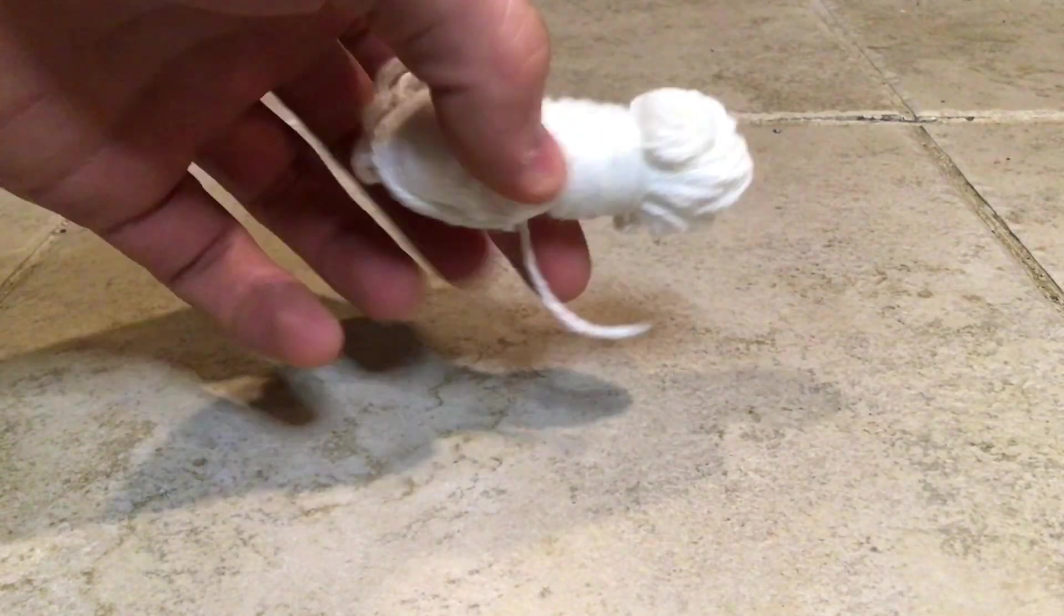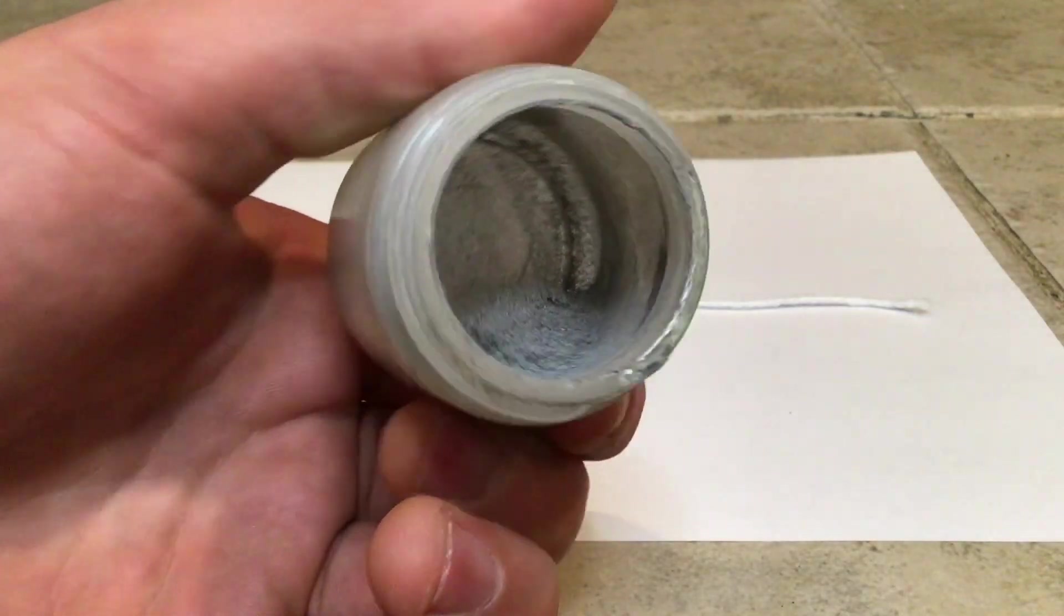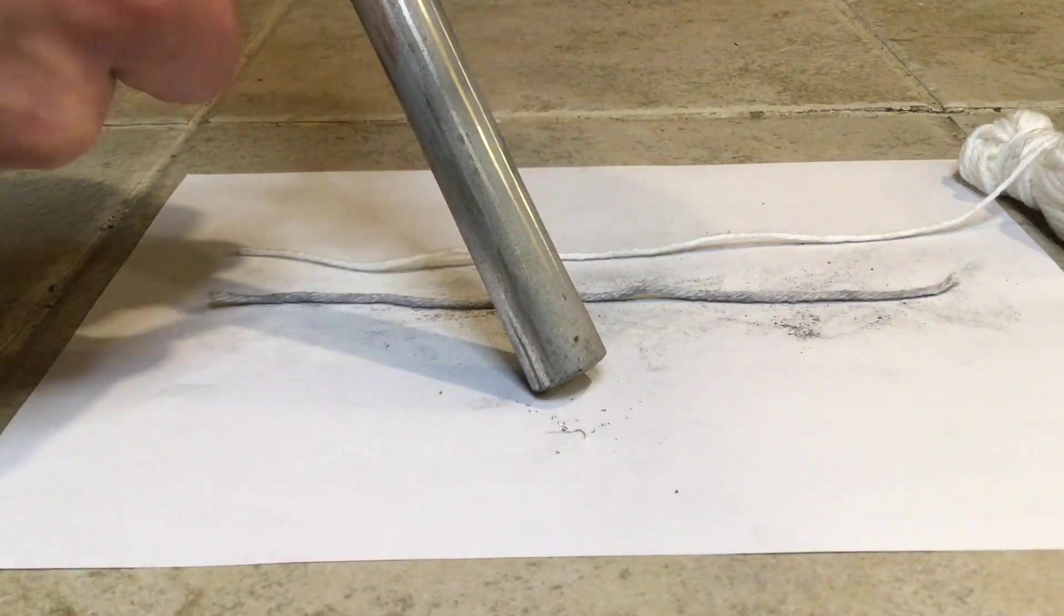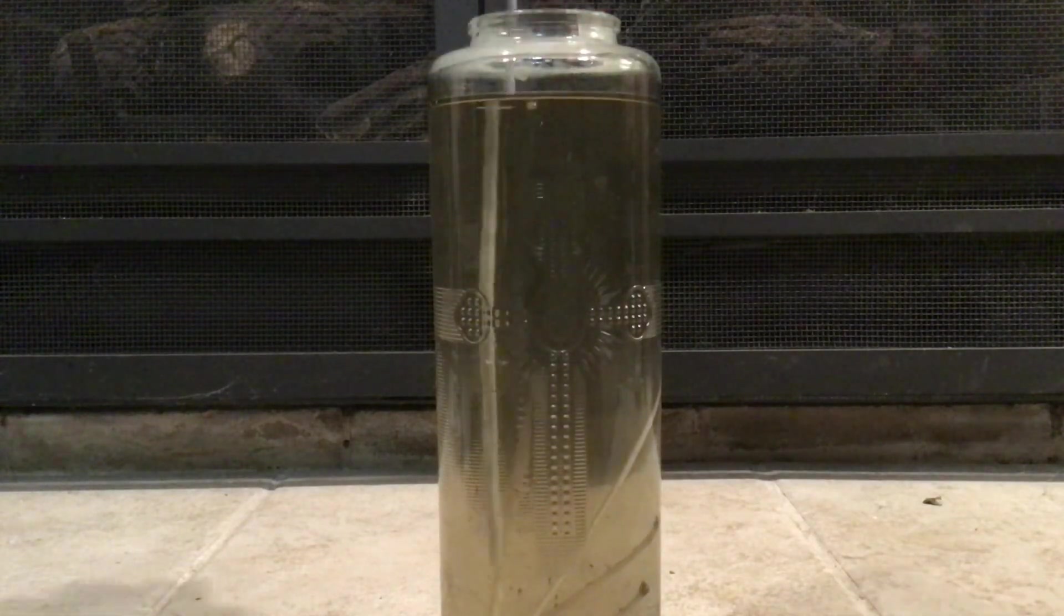This project requires only three very easy to obtain materials. The first is 100% cotton yarn. The second is some magnesium shavings, and this can be from a fire starter from Walmart or any other source of magnesium metal. And finally any source of wax, paraffin, beeswax, or in this case a 50-50 mix.